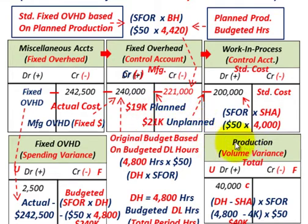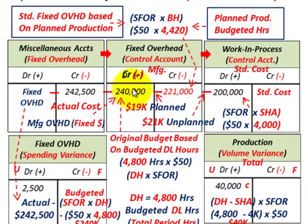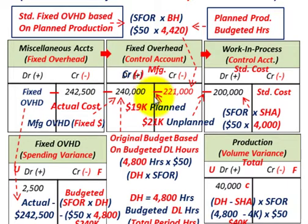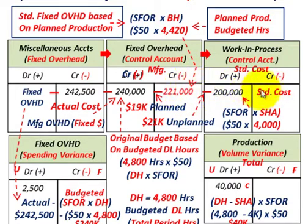The difference between standard cost of $200,000 and planned production of $221,000 is $21,000 — the unplanned volume variance. In all cases, we have an unfavorable volume variance because the budgeted amount of $240,000 is greater than standard cost of $200,000, split between the $19,000 planned production volume variance and $21,000 unplanned production volume variance.